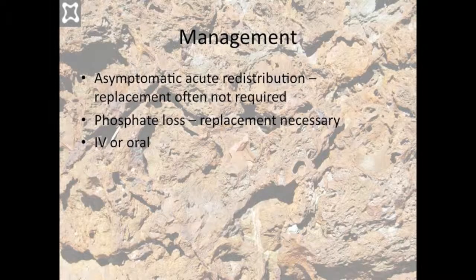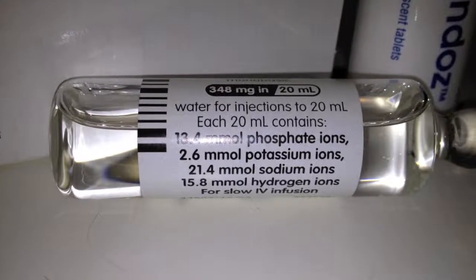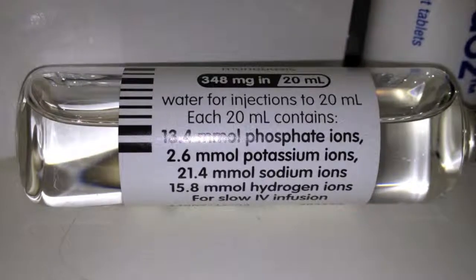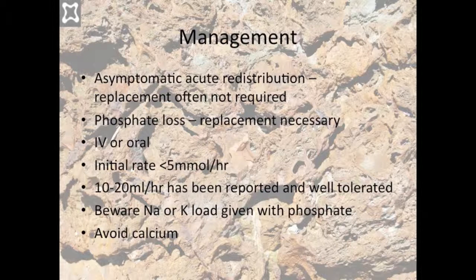IV phosphate comes as sodium or potassium phosphate. It is usually recommended to be given at a rate of less than 5 millimoles per hour in adults, though rapid correction in the short term is reported to be well tolerated. High doses of potassium and sodium will be given with phosphate and this should be borne in mind when prescribing. Large amounts of phosphate cannot be given with calcium as the two may complex, leading to potentially fatal complications. An alternate form such as glycerol phosphate can be given if large doses of potassium or sodium are problematic or if calcium is being replaced.